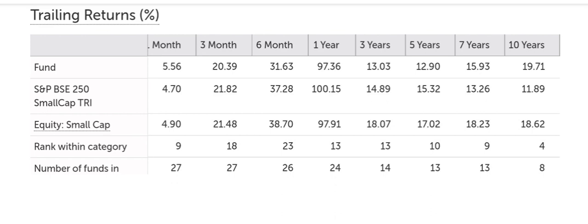It means that whenever any asset class performs extraordinarily in the last 3 to 5 years — maybe 30–40% CAGR per annum, or 3 to 5 times in 3 to 5 years — there is a high chance of that particular stock, mutual fund, or scheme underperforming afterward. Thank you very much for listening.